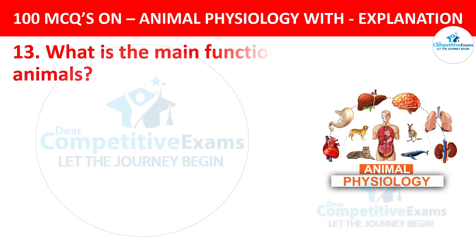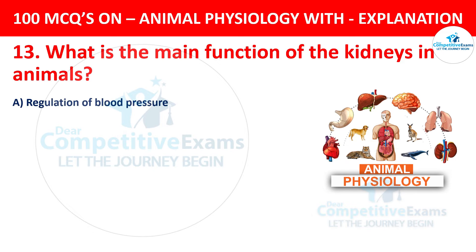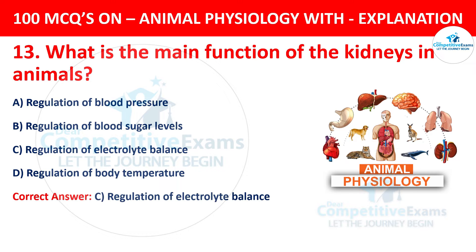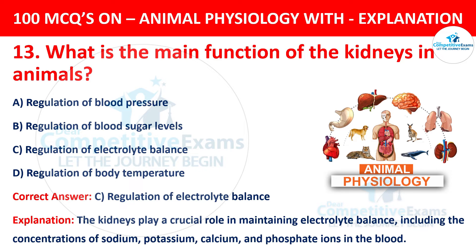Question number 13. What is the main function of the kidneys in animals? The options are regulation of blood pressure, regulation of blood sugar levels, regulation of electrolyte balance, or regulation of body temperature. The correct answer is C, regulation of electrolyte balance. The kidneys play a crucial role in maintaining electrolyte balance, including the concentration of sodium, potassium, calcium, and phosphate ions in the blood.